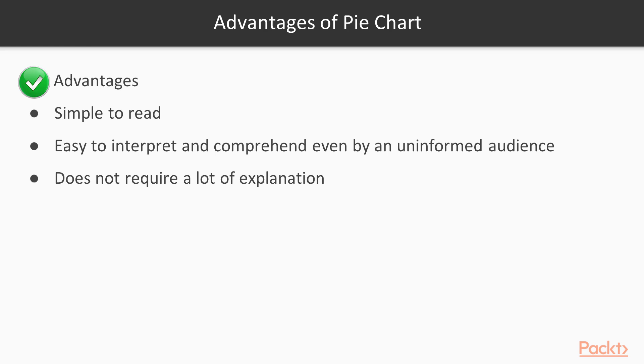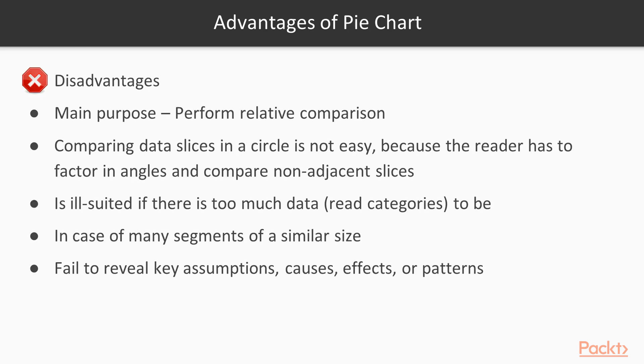Disadvantages of pie chart: the main purpose of pie chart is to be able to perform relative comparison. Comparing data slices in a circle is not easy because the reader has to factor in angles and compare non-adjacent slices. It is ill-suited if there is too much data to be represented on the pie chart. If there are many segments of a similar size, it is hard to interpret and is confusing. Pie charts fail to reveal key assumptions, causes, effects, or patterns.